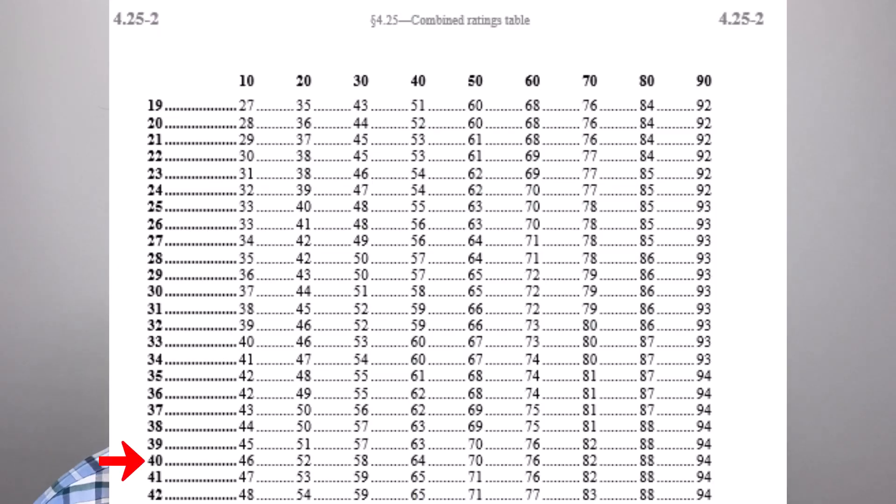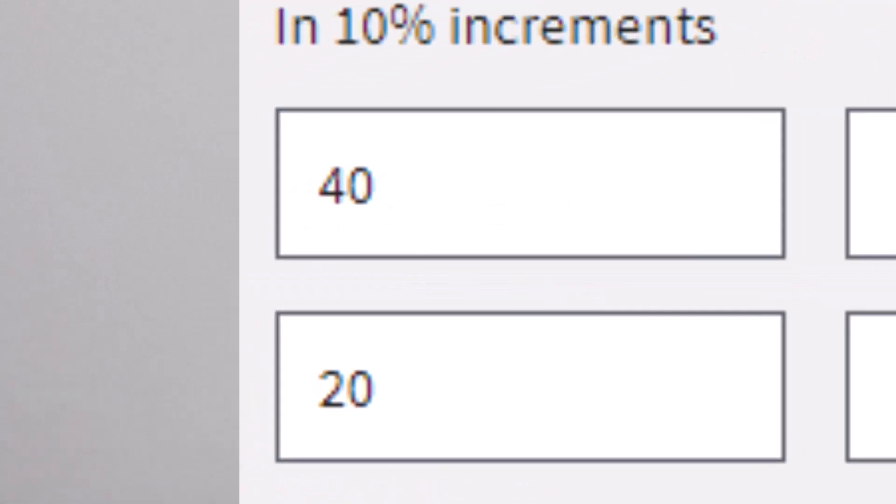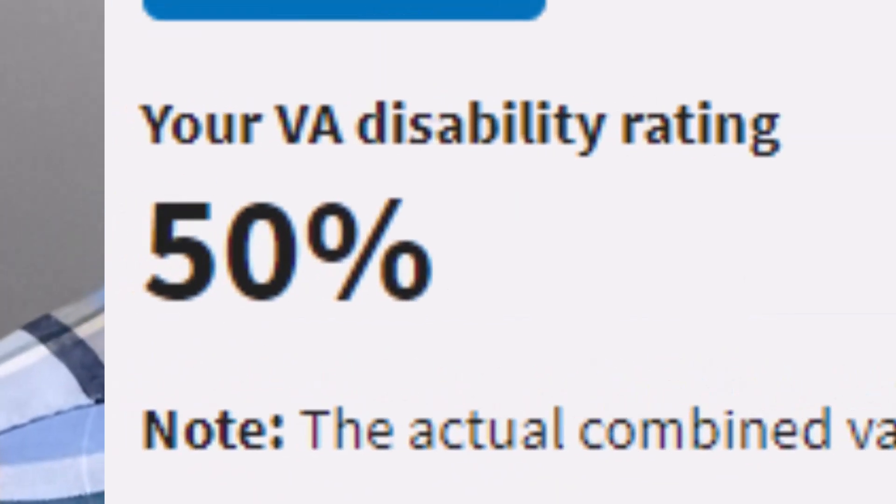If we had a person with, say, 40 and 20% ratings, we come down the left side of the table to 40. Over to the 20% column, the combined value is 52%, which rounds down to 50%. And then, we'll just check ourselves on the calculator. Yep, that's right.